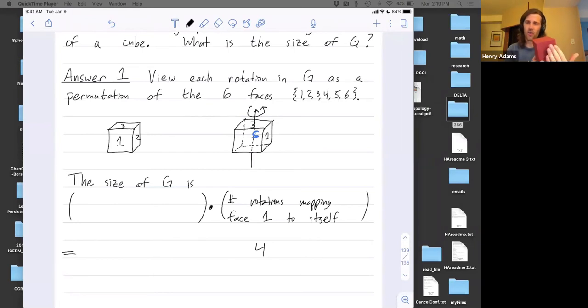You know, face 1 gets mapped onto itself. So sure, I guess face 1 rotates, but it still gets mapped to face 1. Face 1 doesn't get mapped to face 2 or face 3.